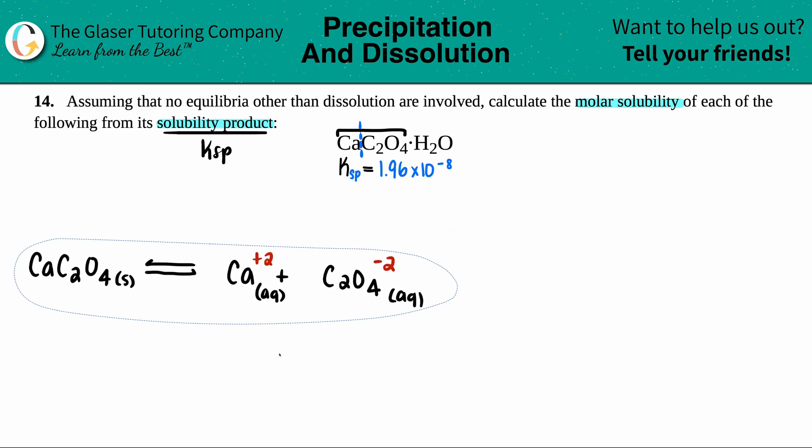But I'm going to use it to make my Ksp equation. Remember, the general formula for Ksp is just equal to the concentration of the products raised to their coefficients. No reactants because they're solids. Remember, no solids are allowed in any K expression.